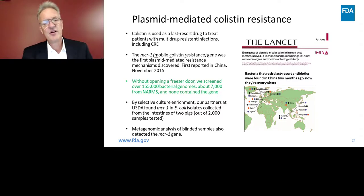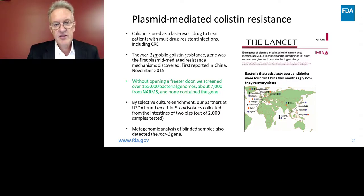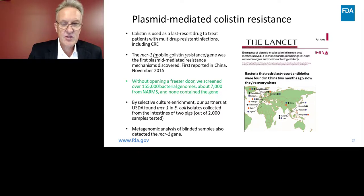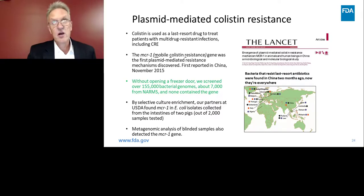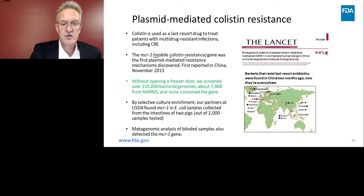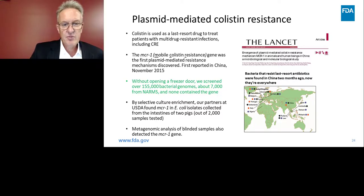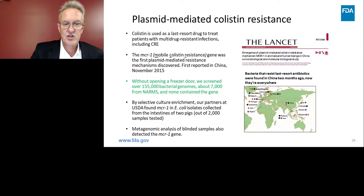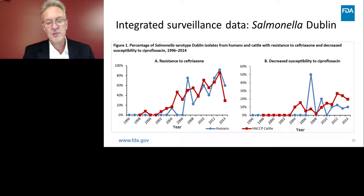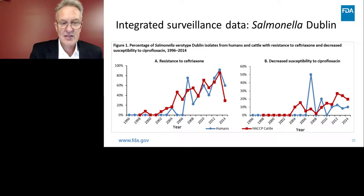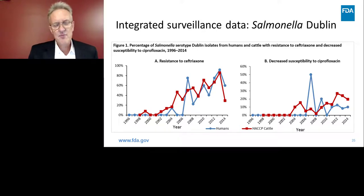Another great example of how genomics is transforming surveillance is that it's a portable, permanent, and interpretable dataset. You can go back in time when a new resistance gene emerges and see if you have it in your country, your area, or your hospital. A good example was the MCR-1 gene, first reported in China in 2015. Right away, people around the world screened their freezers and databases. At the time we had 155,000 bacterial genomes we screened and could say that gene had not made it to the U.S., informing the practitioner community about that fact — very valuable data that we could now get quickly.